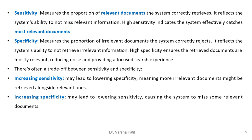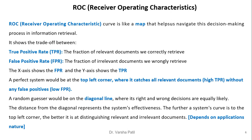When we want to increase sensitivity — that is, retrieve all the relevant documents in the collection — some irrelevant documents also appear. When we focus on specificity and do not accept irrelevant documents in the results, some relevant documents may be missed. Increasing sensitivity may lead to lowering specificity, meaning more irrelevant documents might be retrieved alongside the relevant ones. Increasing specificity may lead to lowering sensitivity, causing the system to miss some relevant documents.